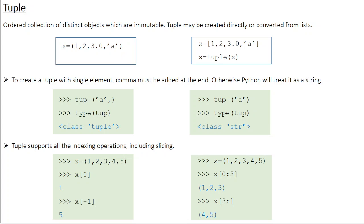Tuples are very similar to lists. The only difference is that a list is mutable — you can change the values of the elements — whereas a tuple is immutable; you cannot change the values. You can create a tuple directly by defining the elements within a pair of normal brackets, or you can first define a list and then convert it into a tuple using the keyword 'tuple'. When you say x equal to tuple(x), the list x is converted into tuple x.